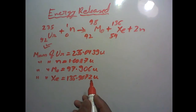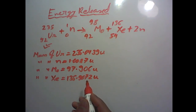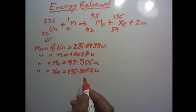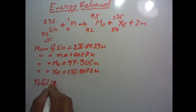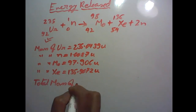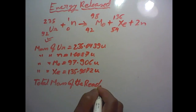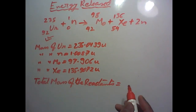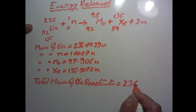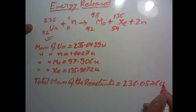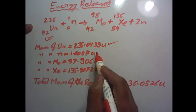This is a typical fission reaction. To find the energy produced in the fission of one nucleus of uranium-235, we need to find the total mass of the reactants on the left-hand side. The total mass of the reactants — uranium-235 and one neutron — is 235.0439 U plus 1.0087 U, which comes to 236.0526 atomic mass units.